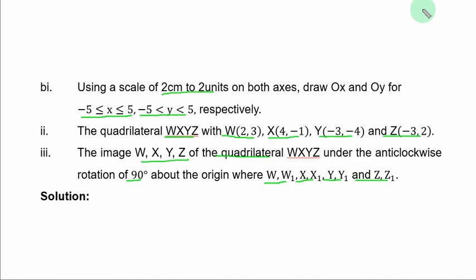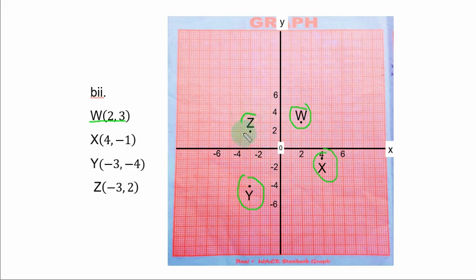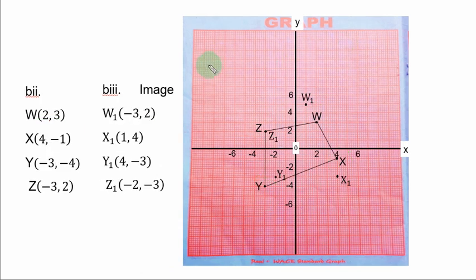For part (iii): find the image W₁S₁Y₁Z₁ of the quadrilateral WSYZ under anticlockwise rotation of 90 degrees about the origin. For an anticlockwise rotation of 90°, the transformation rule is (x, y) → (-y, x). So W(2,3) → W₁(-3,2); S(4,-1) → S₁(1,4); Y(-3,-4) → Y₁(4,-3); Z(-3,2) → Z₁(-2,-3).